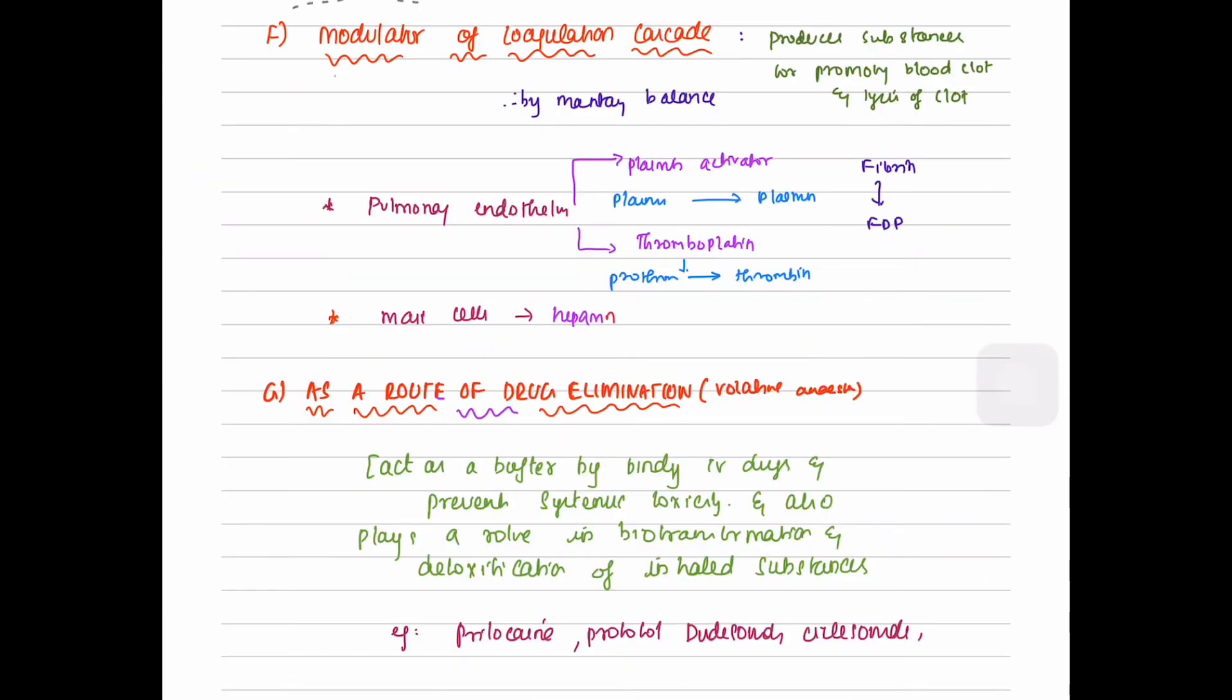The lung also plays an important role in modulation of coagulation cascade. It produces substances for promoting blood clot and lysis of the clot, therefore maintaining the balance. The pulmonary endothelium produces plasmin activator, which activates plasminogen to plasmin. The plasmin then degrades fibrin into fibrin degradation products. The pulmonary endothelium also produces thromboplastin, which activates prothrombin to thrombin. The mast cells produce heparin, which is an anticoagulant.